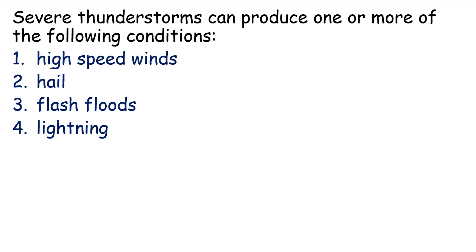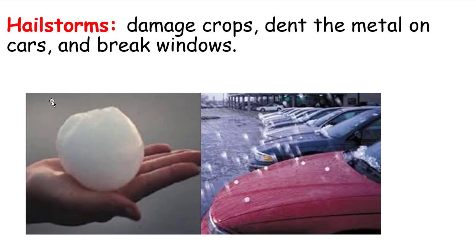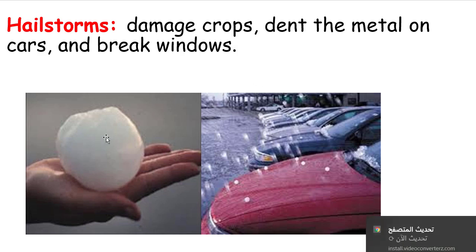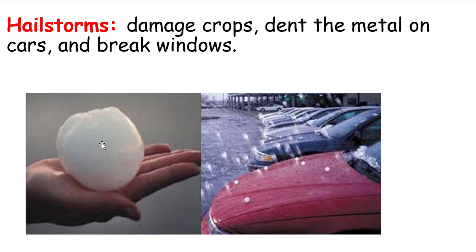Severe thunderstorms can produce one or more of the following conditions: high-speed winds, hail, flash floods, and lightning. Hail storms can damage crops, dent metal on cars, and break windows. As you can see, large pieces of ice can destroy cars, windows, homes, trees, and even small animals.